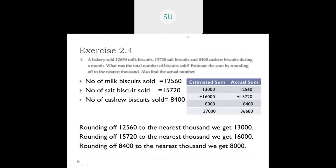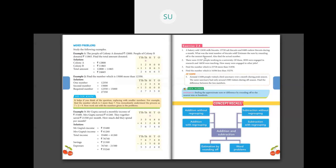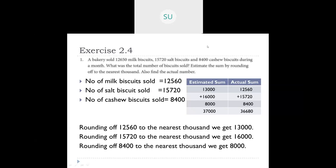Now we'll look at Exercise 2.4 on page 111 from your textbook. There are four questions. We'll solve them separately and you should copy the questions and answers into your notebook. Question one: A bakery sold 12,650 milk biscuits, 15,720 salt biscuits, and 8,400 cashew biscuits during a month. Find the total number of biscuits sold. Estimate the sum by rounding off to the nearest thousands, and also find the actual number.